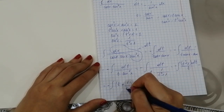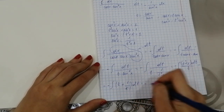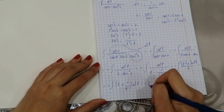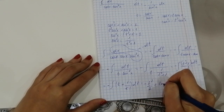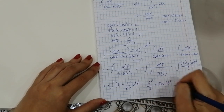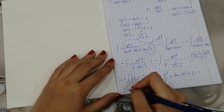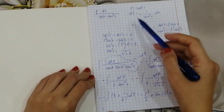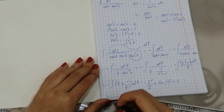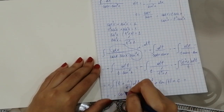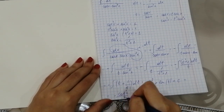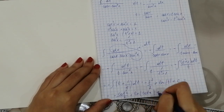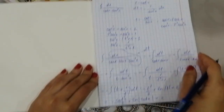Using standard integration formulas, this equals negative t squared over 2 plus ln|t| plus C. Since t equals cot x, the answer is negative cotangent squared x over 2 plus ln|cotangent x| plus C.